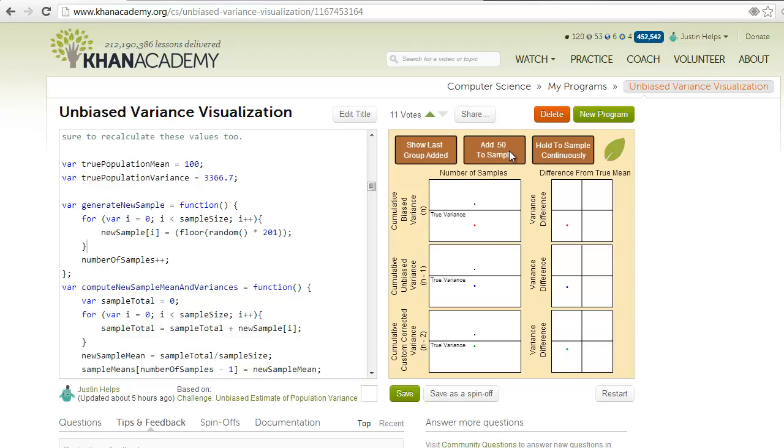When we add our sample, the program calculates the variance of the sample using three separate methods. The first method is summing the squares of the deviations from the sample mean and dividing by the size of the sample, and then the same thing but dividing by n-1 and then by n-2.